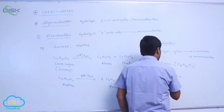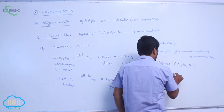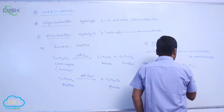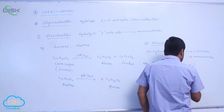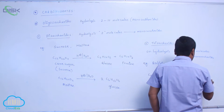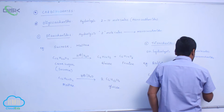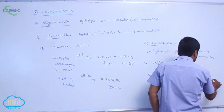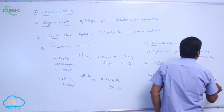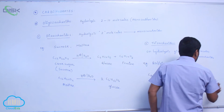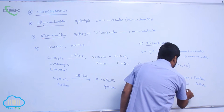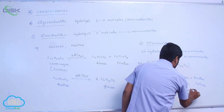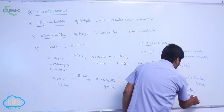On hydrolysis, raffinose gives one unit of glucose C6H12O6, one unit of fructose C6H12O6, and one unit of galactose C6H12O6.